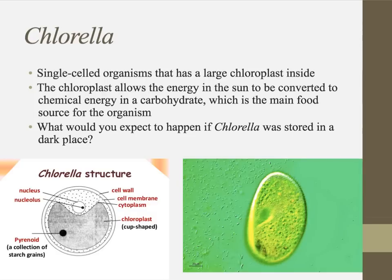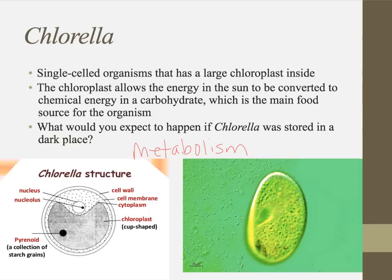Another interesting unicellular organism to study is chlorella. Chlorella are single-celled organisms that have one large chloroplast inside — a cellular organelle that allows energy from the sun to be converted into chemical energy in the form of a carbohydrate. In other words, we're talking about photosynthesis. If you store chlorella in a dark place, it's no longer able to undergo photosynthesis — a good example of how organisms demonstrate a metabolism, converting solar energy into chemical energy.